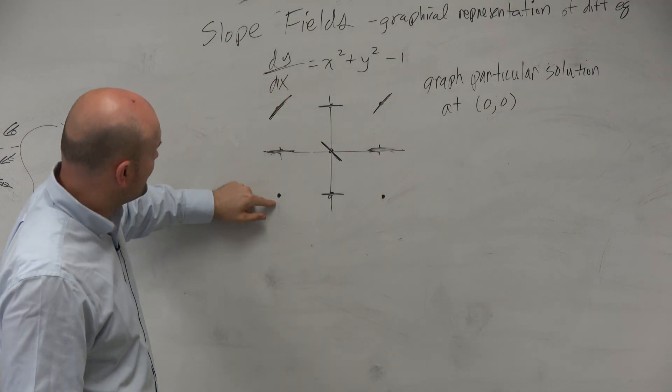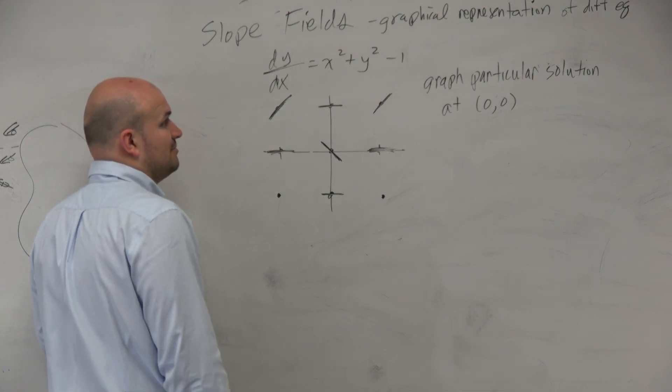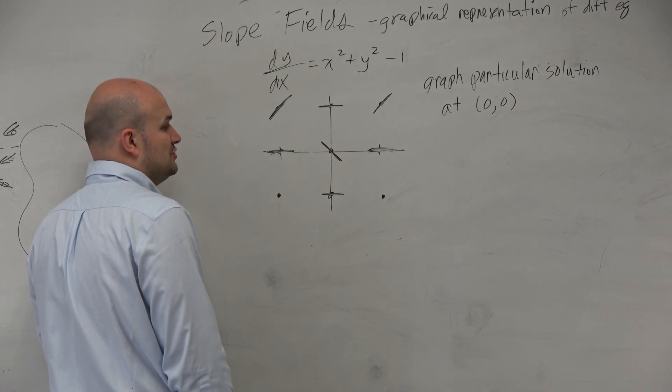And then let's look down here. This is negative 1, negative 1. So again, that's going to be negative 1 squared plus negative 1 squared is 1 squared plus 1 squared, which is 2, which is 1.